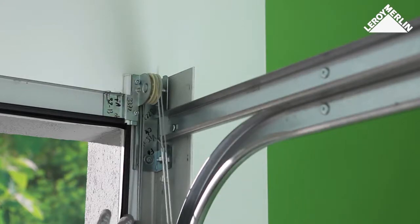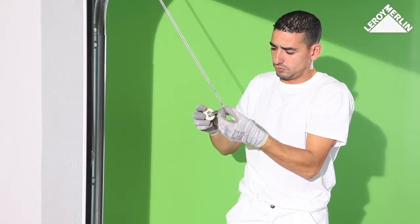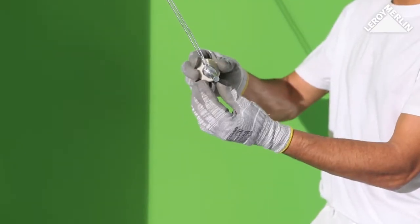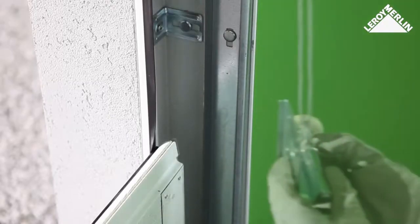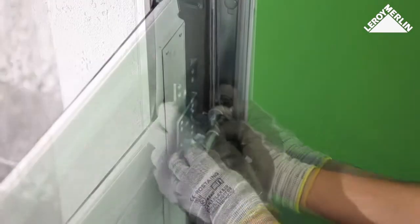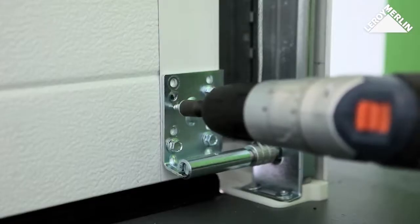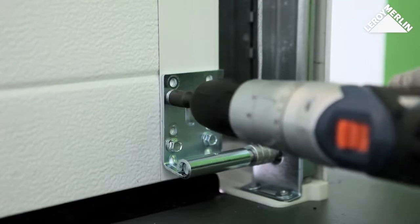Install the guide roller brackets on each side of the panel. Assemble the cables on each side of the rollers and guide roller brackets. Insert the roller into the vertical rail, then fix the roller brackets onto the bottom of the door.